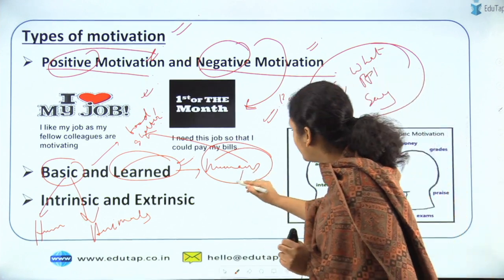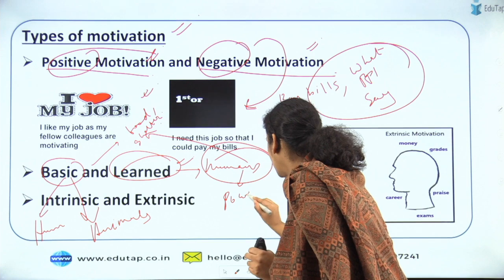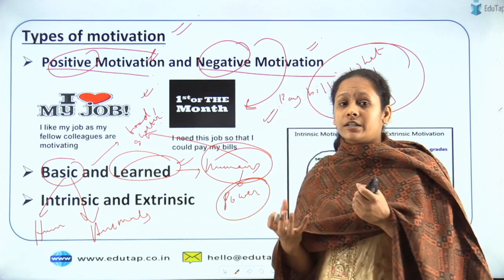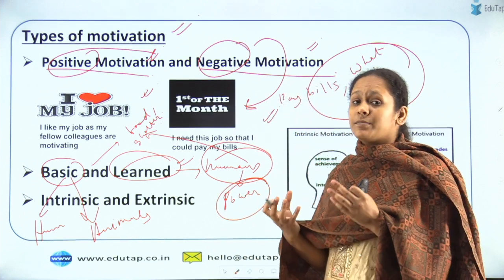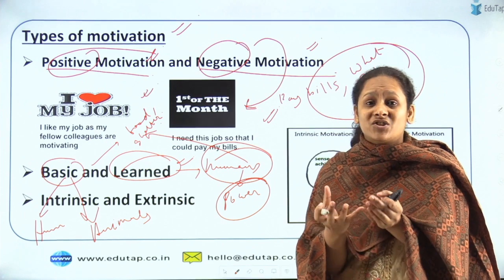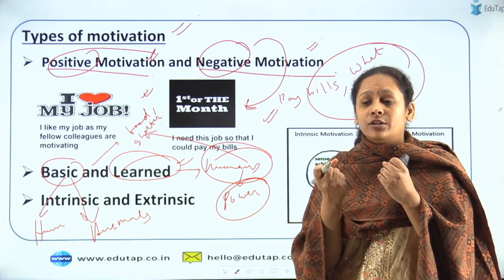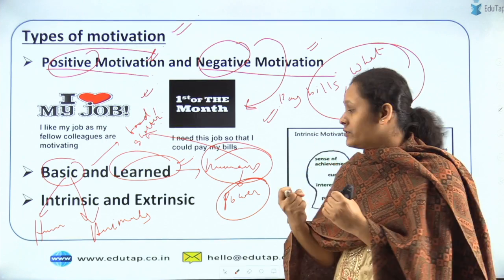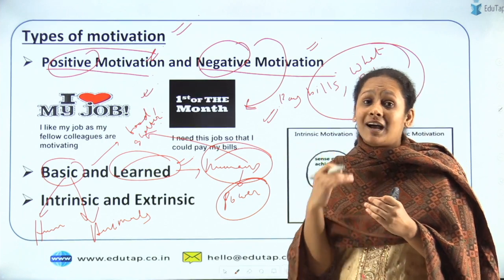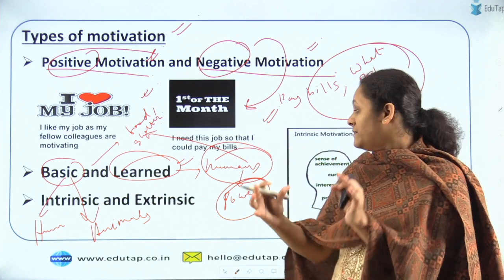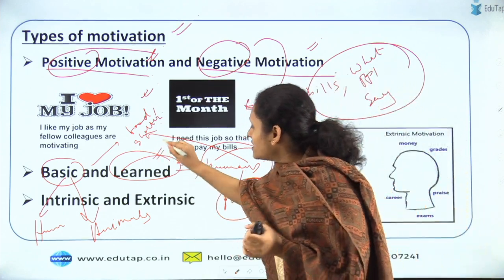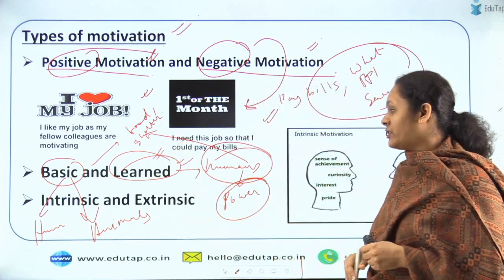For example, a person who wants power — who wants to control everyone in the organization. That inner call which motivates him to work hard to get into a good position — that kind of motivation is known as learned motivation.